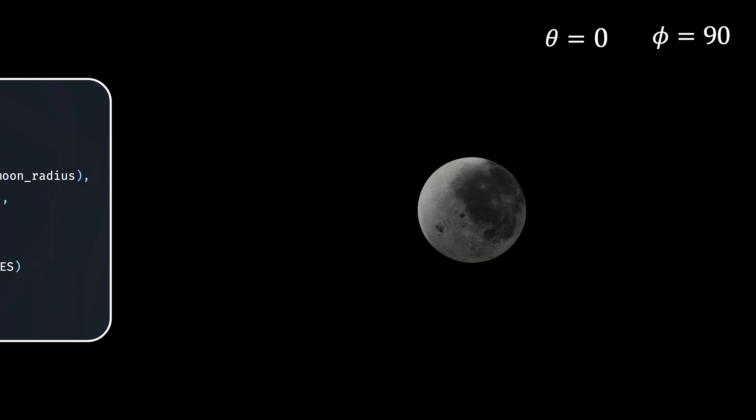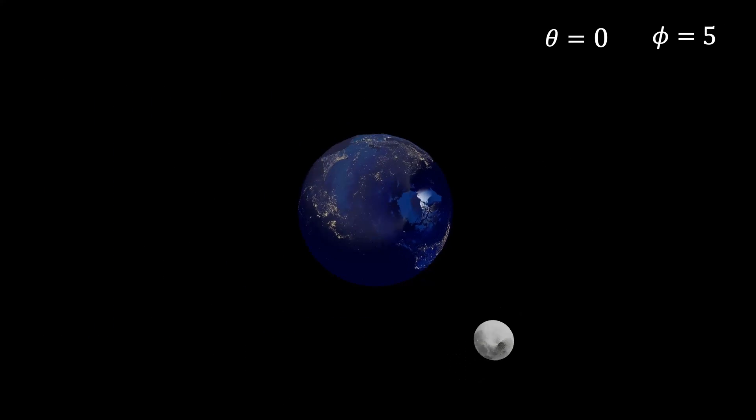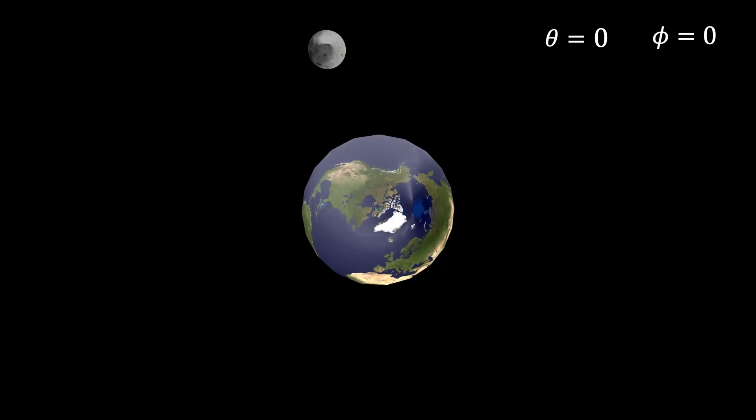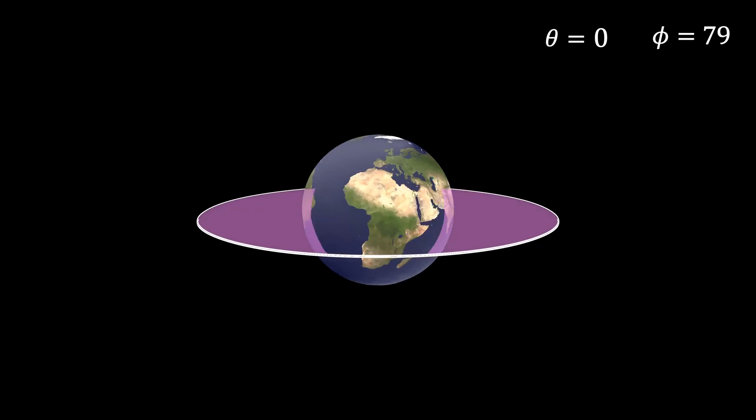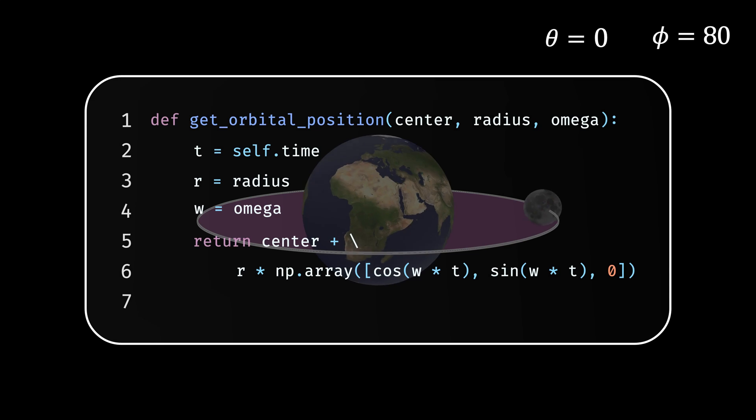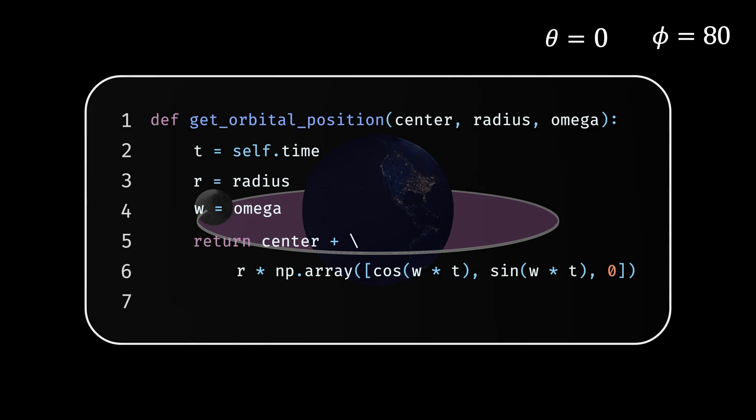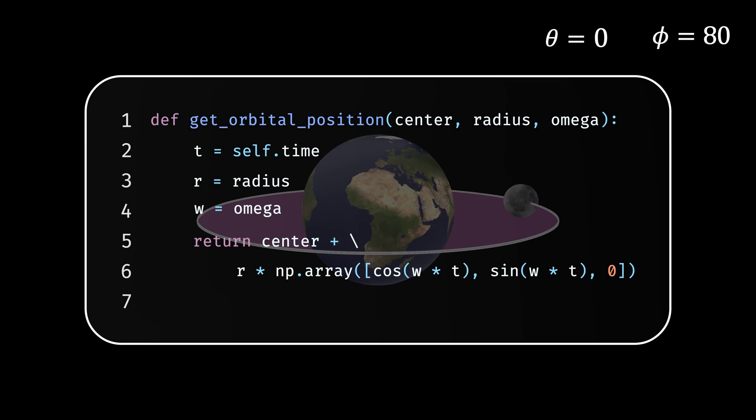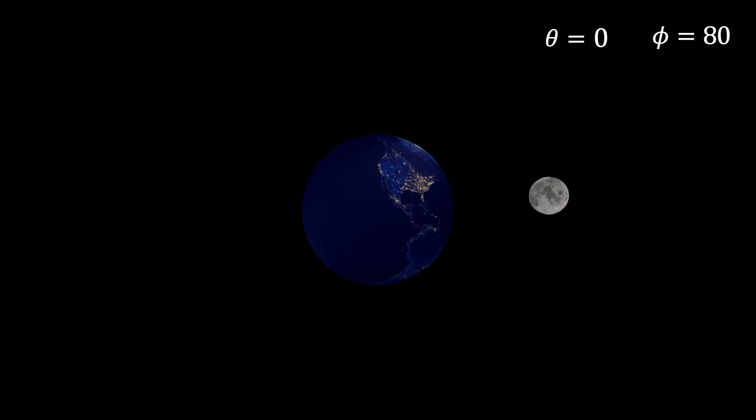And now comes the exciting part. Simulating the revolution of earth around the sun and the moon around the earth. To achieve this, I'll use the update function and specify the planet's position with respect to the time. So, let's define a common function for both the moon and the earth. This function will check parameters like the center about which the planet rotates, the radius of the orbit, which I'm assuming to be circular and not ellipse, and finally, the angular velocity. So, to define the position coordinates, I can transform the radial coordinate system to the Cartesian coordinate system. And the xy components would be cos of omega t and sin of omega t. You see, the moon starts revolving around the earth.